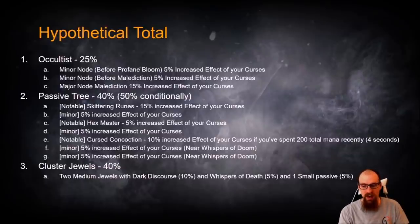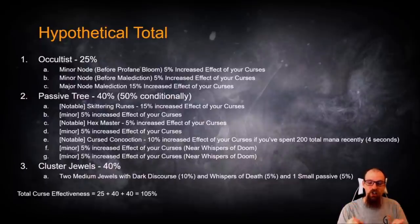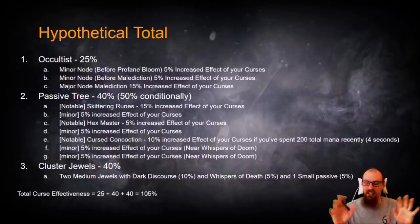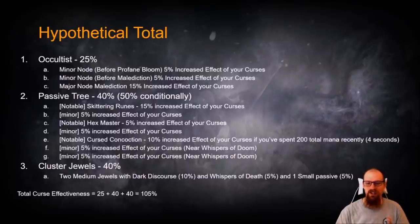Two Medium Jewels with Dark Discourse and Whispers of Death, and one small passive added, which gives you 5% there. That total curse effectiveness adds up to 25, 40, 40, which equals 105% curse effectiveness from the new available Power Nodes on a dirt cheap budget that isn't even min-maxing. It's not even coming close to min-maxing. We're not even using Voices yet. We're just using a single large Cluster Jewel to stack two Medium Jewels, let alone starting to use Voices in multiple different spots on the tree to see exactly how effective our curses can be.